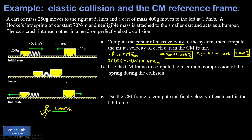For the 400-gram cart, we get the opposite effect. It was moving to the left and we're running to the right, so it appears to move faster to the left. Speaking in terms of magnitude, v2_initial = 1.5 + 1.038 = 2.538 m/s to the left.